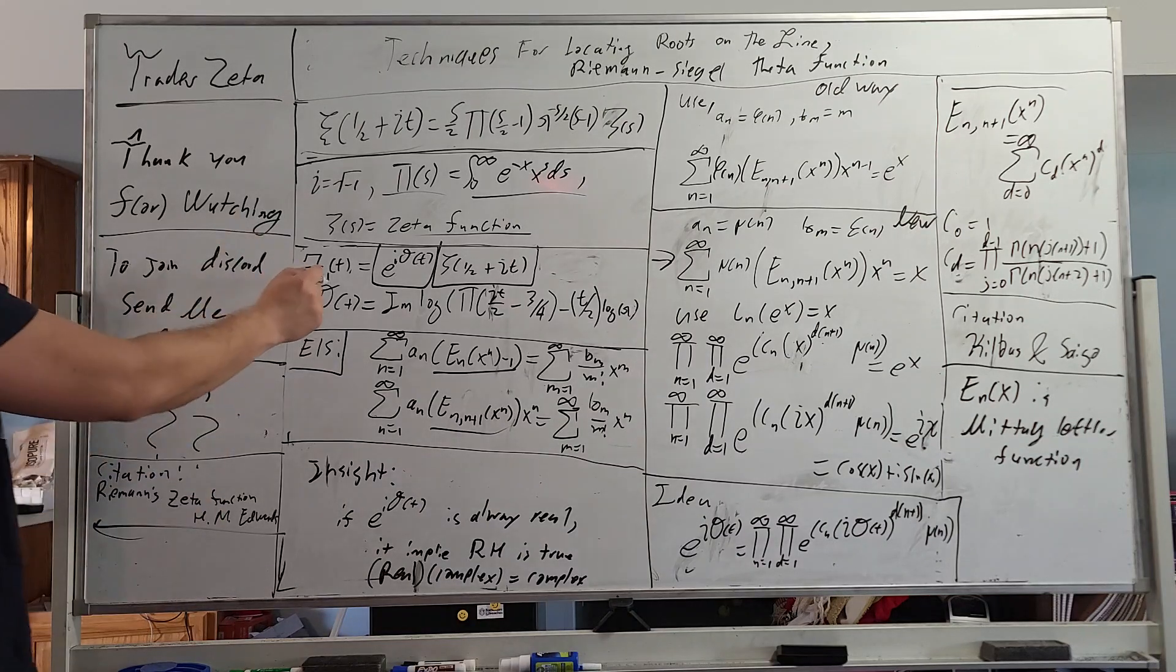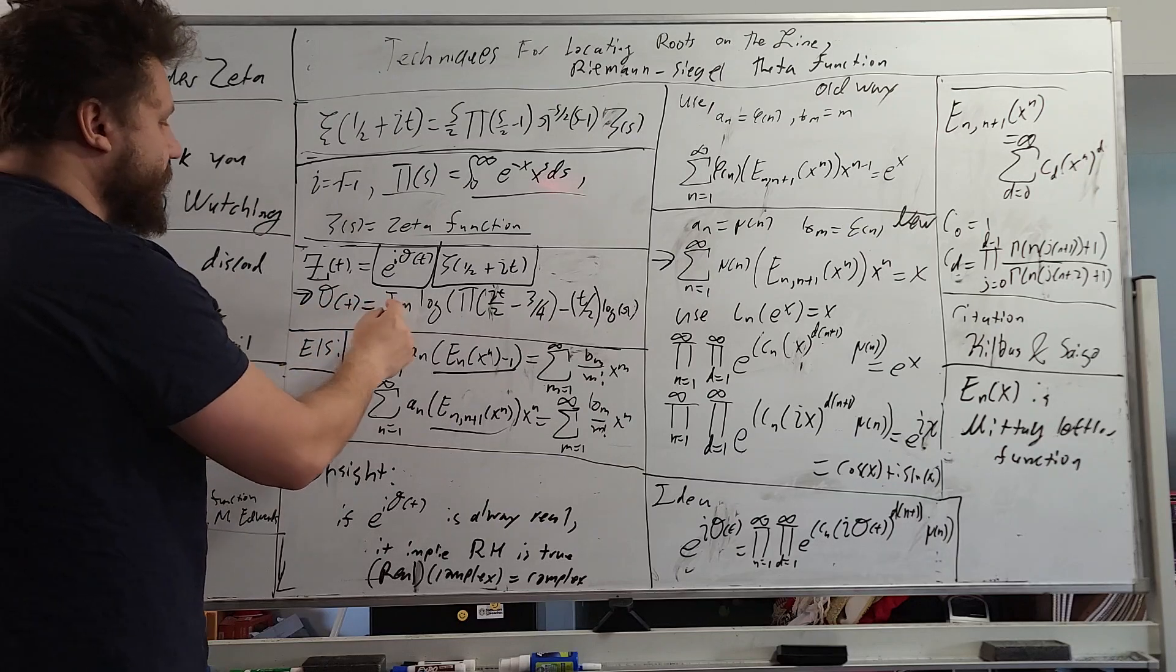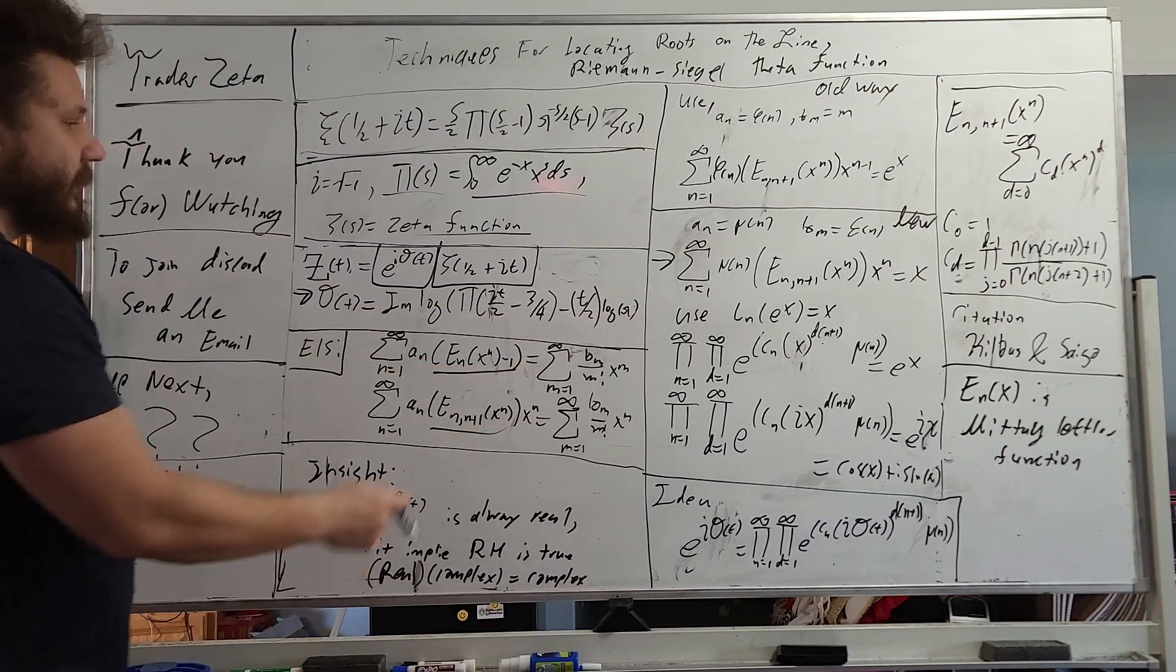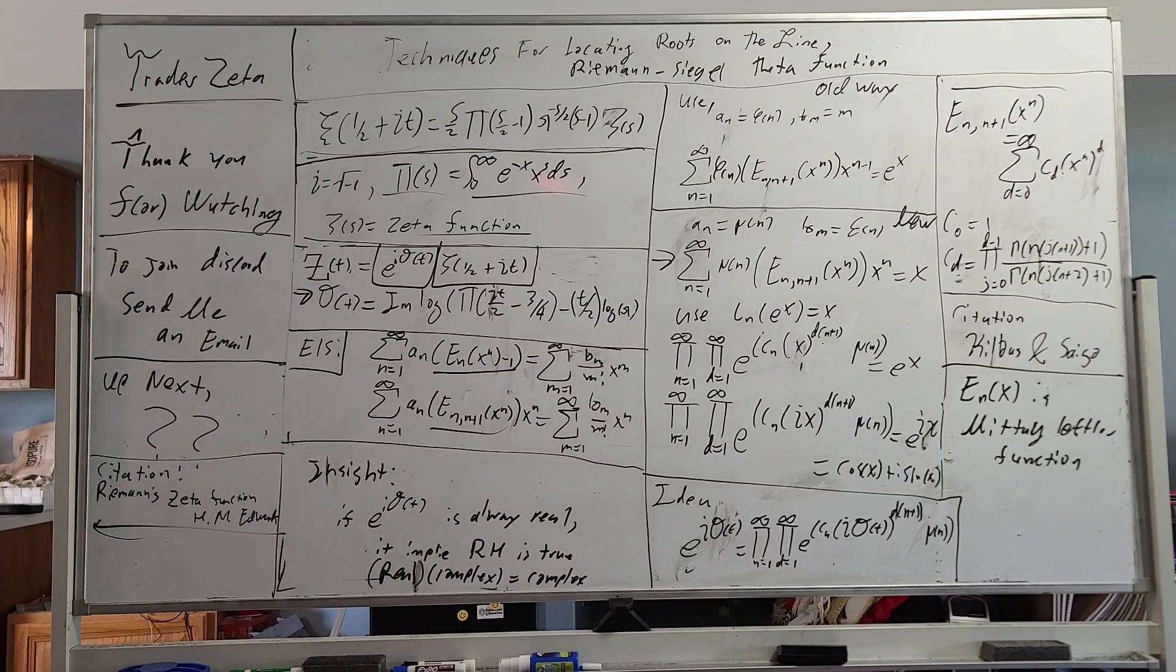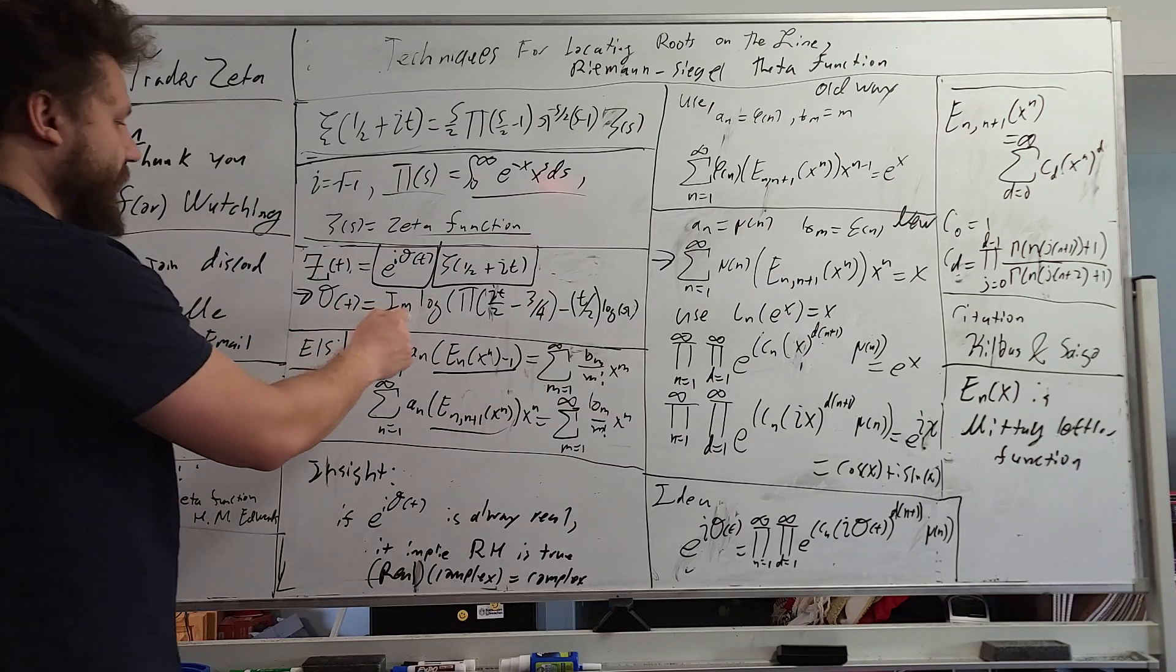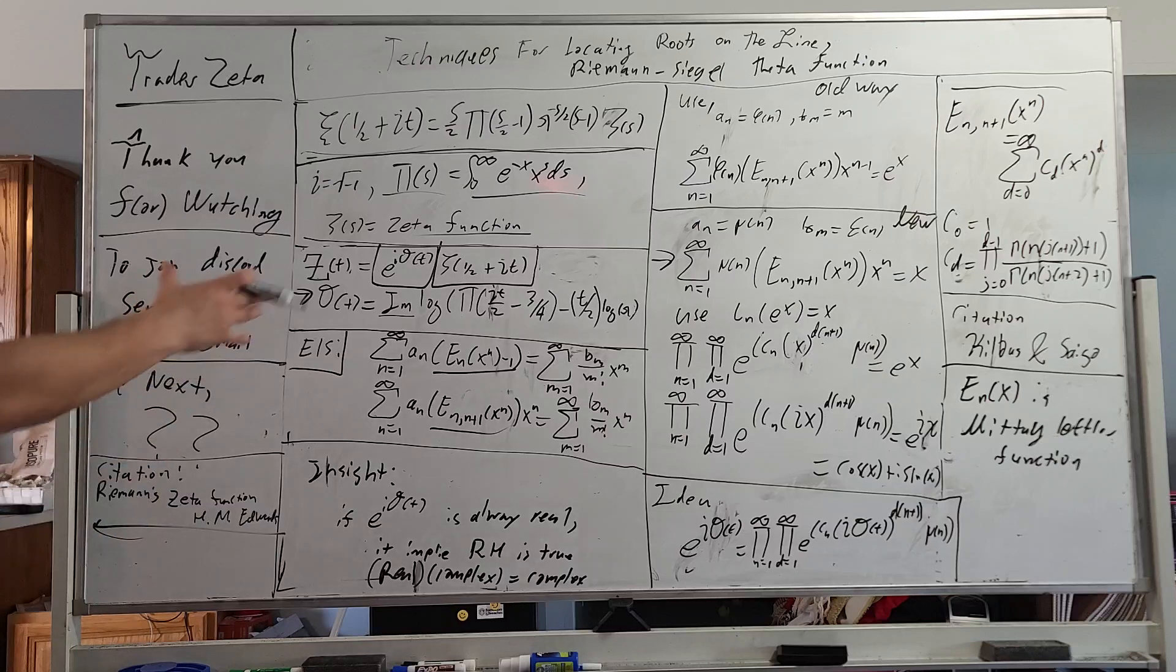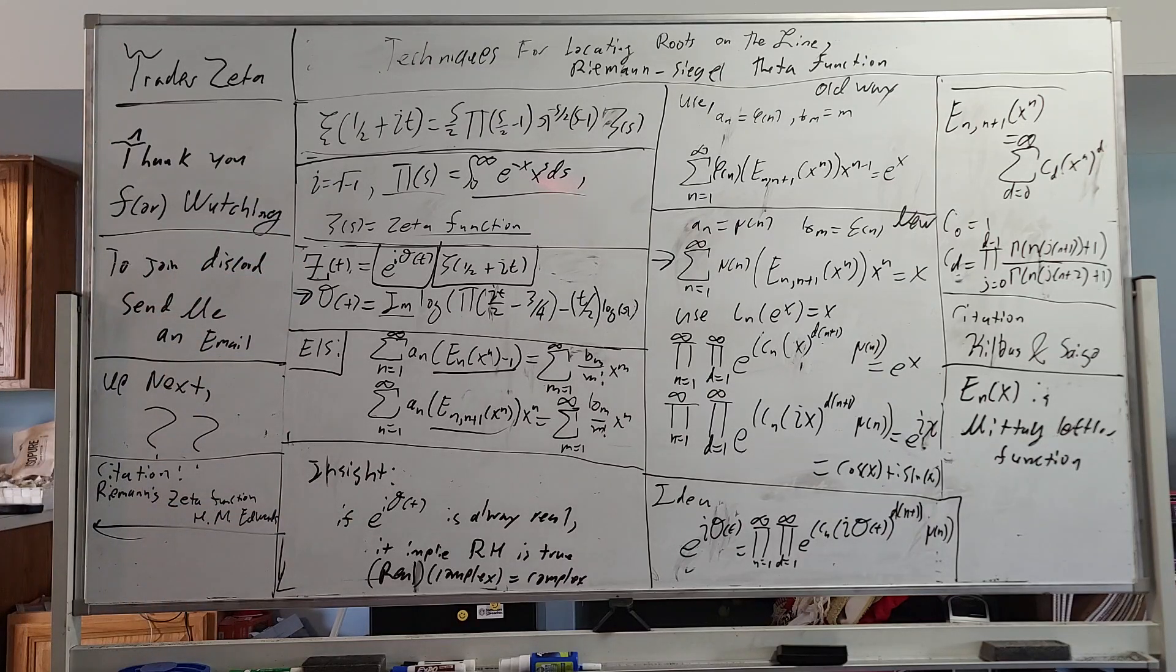So what is this Riemann-Siegel Theta function? You have theta t equals imaginary log, all this kind of stuff, and then minus t divided by 2 times log pi. This is one definition. I think this is supposed to be interpreted as arg in the book. I've looked up other definitions too.